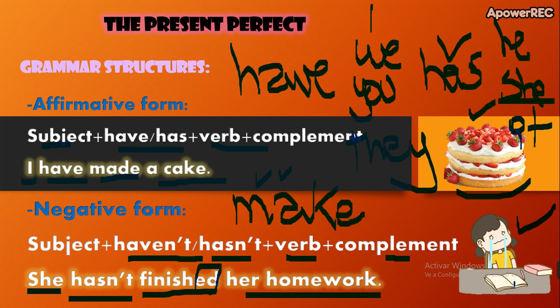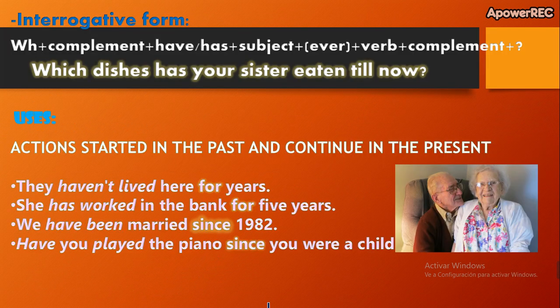In Spanish we can translate it without saying 'ella' — if we already know it's a woman, we just say 'No ha terminado su tarea.' We don't say 'Ella no ha terminado su tarea.' But in English, you must include the pronoun: She hasn't finished her homework.